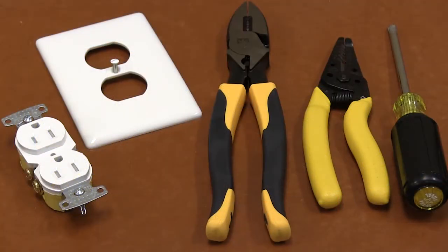Let's start by reviewing what materials you will need. You will need an X-Clamp receptacle, a wall plate, a screwdriver, a spice crimp connector, pliers, and a crimper.